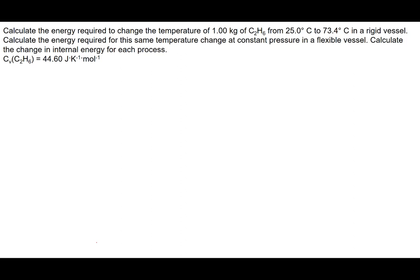In this video we're going to go through a thermochemistry problem where we're going to be calculating the heat, the work, and also the change in internal energy for the heating of a gas — in this case ethane, C2H6. The problem is: calculate the energy required to change the temperature of one kilogram of C2H6 from 25 degrees Celsius to 73.4 degrees Celsius in a rigid vessel, and also at constant pressure in a flexible vessel. We're given the heat capacity at constant volume for ethane, which is 44.60 joules per Kelvin per mole.